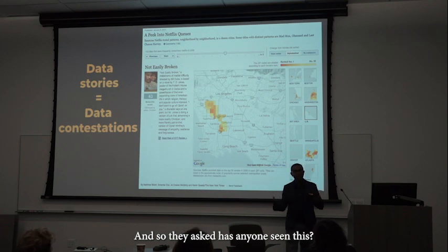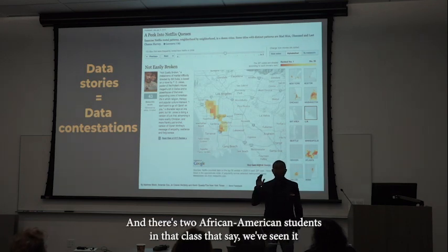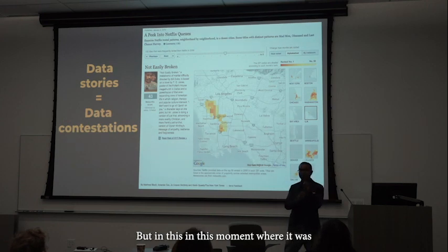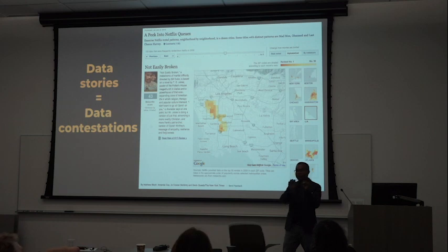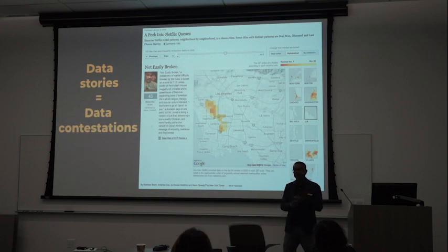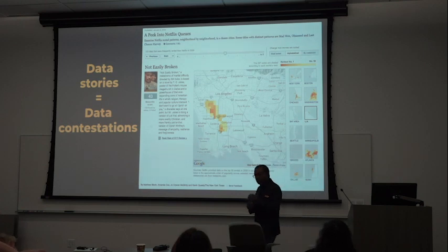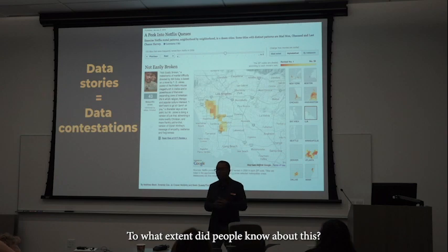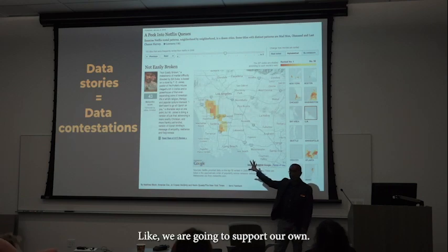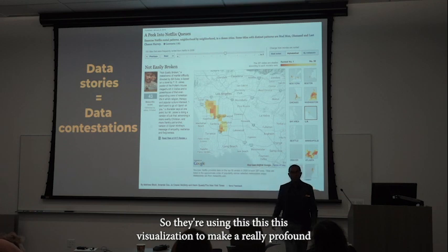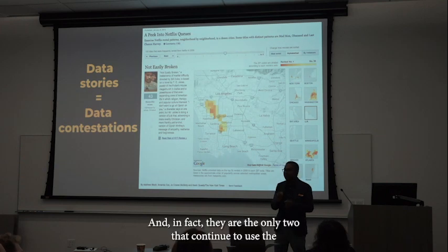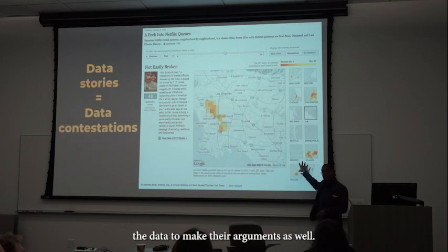The teacher asks if anyone has seen it, and two African American students say they've seen it and explain how much they liked it. But in this moment where 'ghetto' had just been said, this becomes a contestation over what it means. The teacher continues to avoid the issue, thinking about questions around publicity. But the two African American students make the claim that this is about racial solidarity — they're going to support their own. They use the visualization to make a really profound and compelling argument around racial solidarity, and in fact they are the only two who continue to use the data to make their arguments.